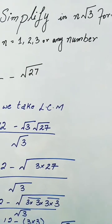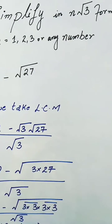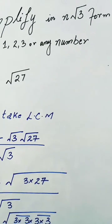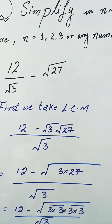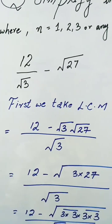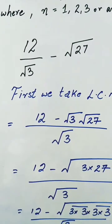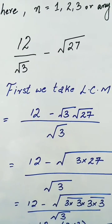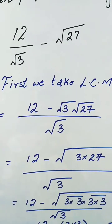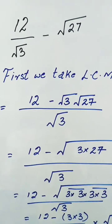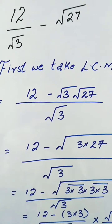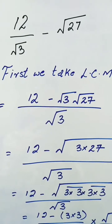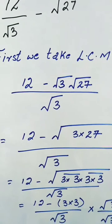Now we will look at another question in which we have to simplify in the form n√3, where n could be any number such as 1, 2, 3, or any number. We have the question: 12√3 minus √27. First, we take out the LCM of root 3, and it becomes 12 minus root 3 into root 27, divided by root 3.